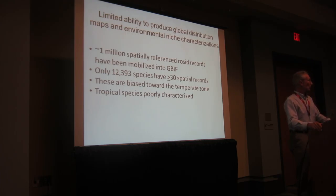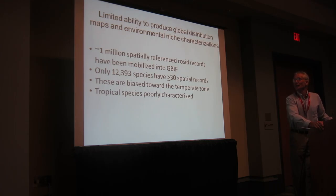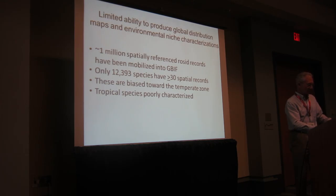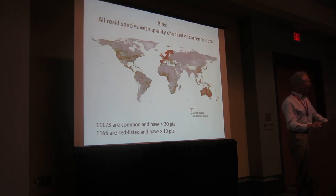Not only is it difficult to build a meaningful big tree, this also extends to our ability to pull in other data. In a huge effort to reconstruct global distribution maps and environmental niche characterizations across the rosids, we — mainly Ryan Folk — accumulated 1 million spatially-referenced rosid records placed in GBIF. But only about 12,000 species have more than 30 spatial records, and you really need about 50 to do anything meaningful. These records are heavily biased towards the temperate zone — a lot in Europe, parts of North America, Australia.